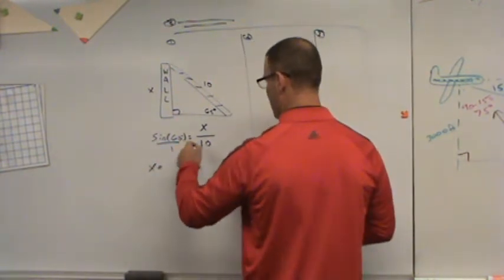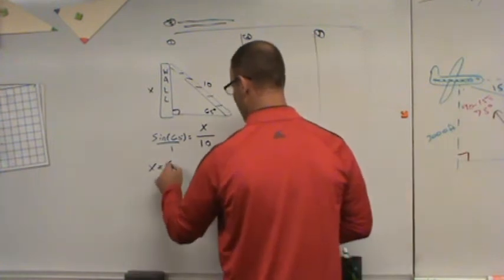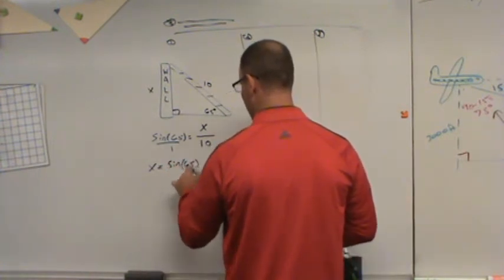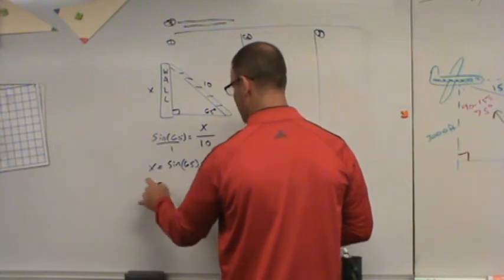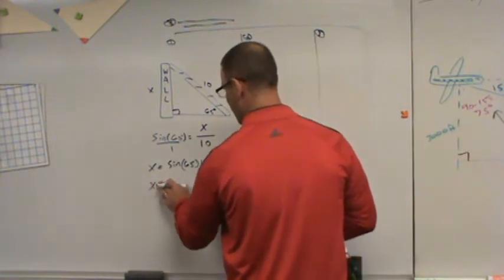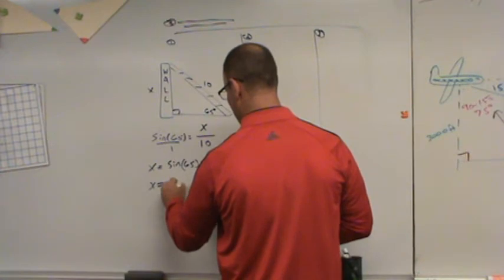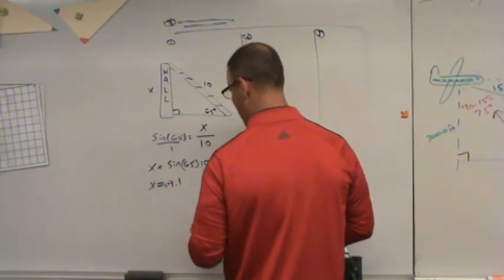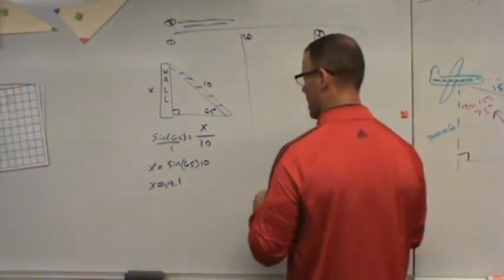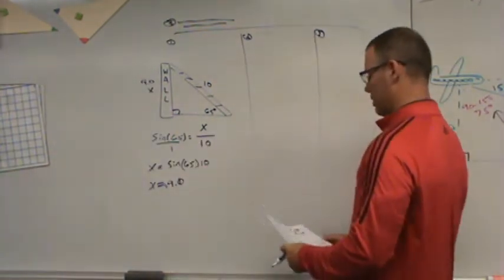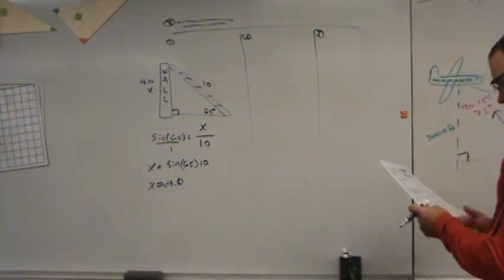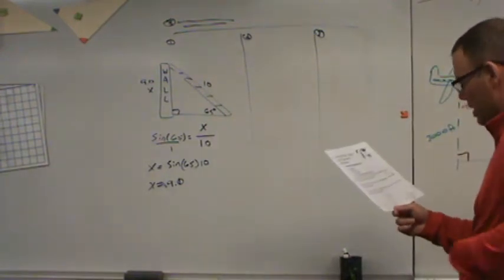When you cross multiply, you're going to get x is equal to the sine of 65 times 10. And in this case, x is, I think it was 9.1 or 9. I think it was actually 9 is what it was. 9.0 feet, and there's the height of your wall. Yeah, I got 9 feet.